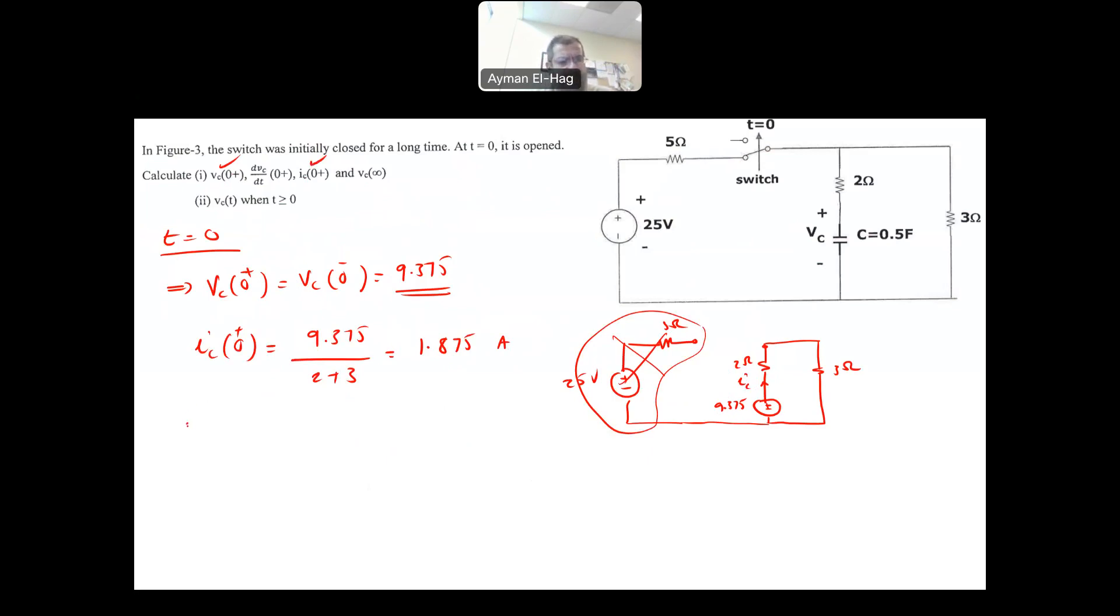How about this? We know that IC at zero plus is equal to C dVC at zero plus dT. This is the formula of the capacitor. So your dVC at zero plus by dT equal to 1 over C times IC at zero plus. So from this, your dVC zero plus dT is equal to 1 over C, 1 over 0.5, which is 2 times that 1.875. And this will give you 3.775. So we found dVC by dT.